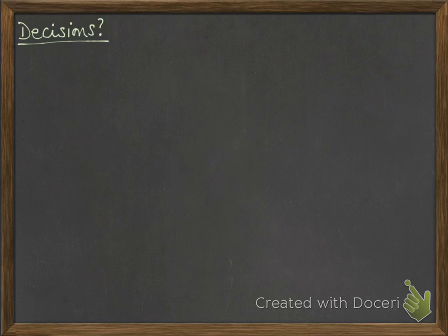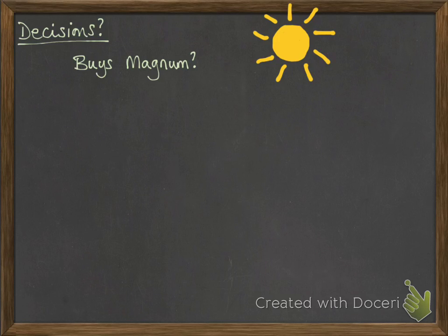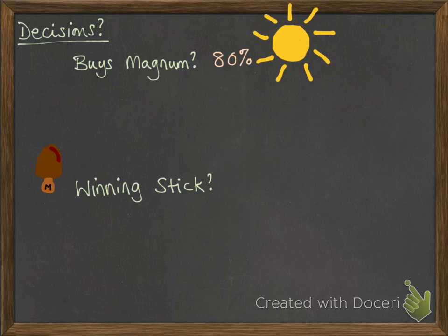The first thing to think about is what decisions are we having to make to create this simulation. First of all, we need to decide whether he buys a magnum, based on whether he thinks it's a hot day or not. Second of all, whether he gets a winning stick from that magnum. He's got an 80% chance of thinking that the day is hot enough.